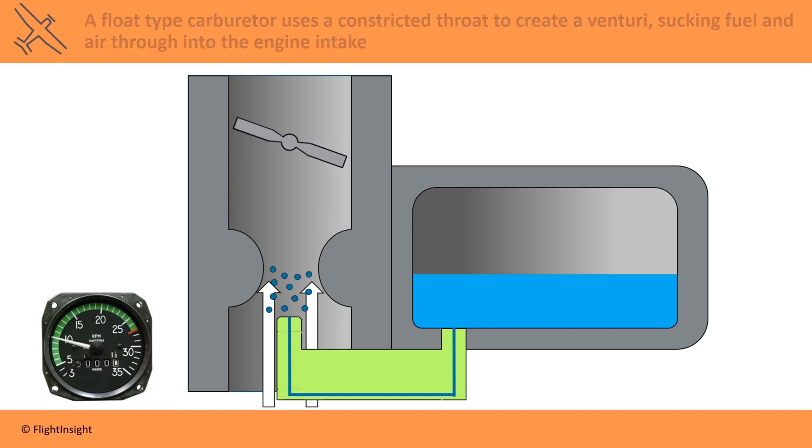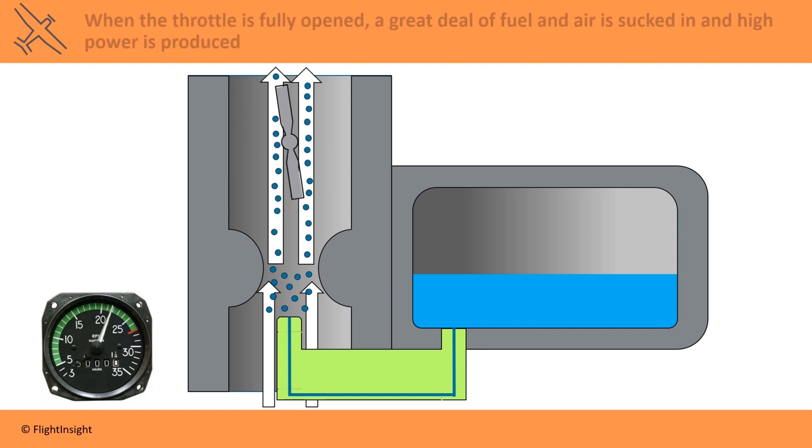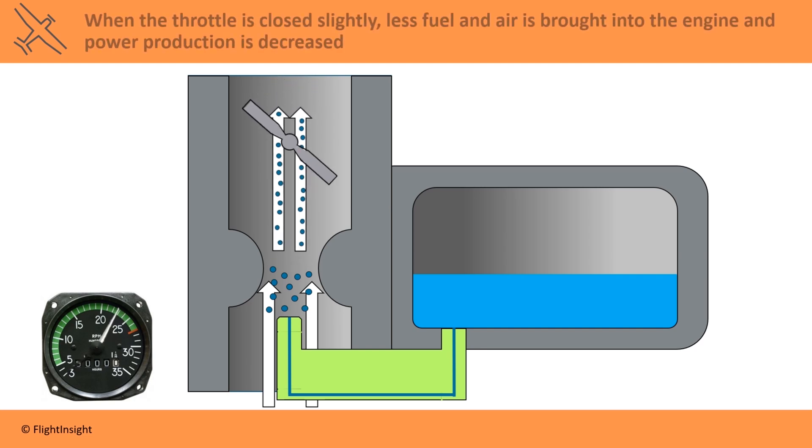A butterfly valve is opened and closed using the throttle control in the cockpit. When the throttle is fully opened, a great deal of fuel and air is sucked in and high power is produced. When the throttle is closed slightly, less fuel and air is brought into the engine and power production is decreased.